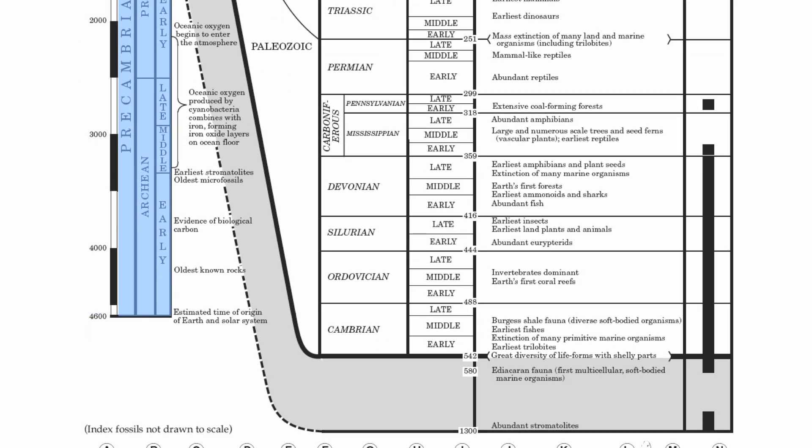Eons are the biggest units of time. The oldest and biggest eon is the Precambrian, which incorporates about 85% of our history. Even though it covers the biggest chunk of history, we actually know very little about it for two reasons. First, the rock during Precambrian time has been eroded and weathered and has undergone such dramatic changes that we have very little Precambrian rock to tell us about the type of life that existed. Second, many organisms that lived during the Precambrian were soft-bodied and didn't fossilize very well in the rock.